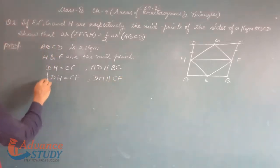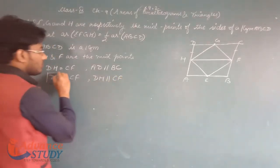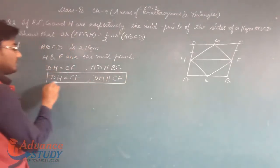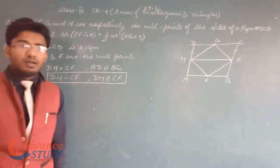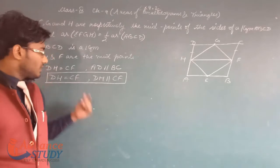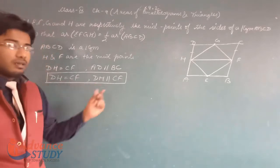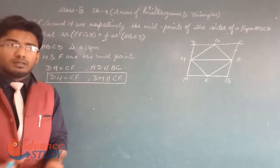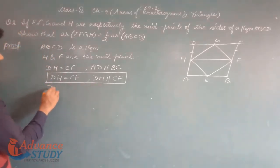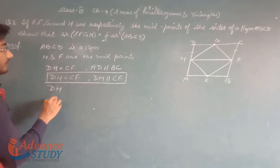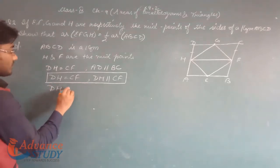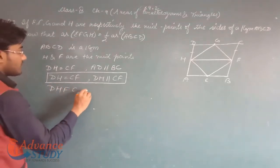Since AD is parallel to BC, and DH equals CF because H and F are midpoints, and DH is parallel to CF, therefore DHFC is a parallelogram.